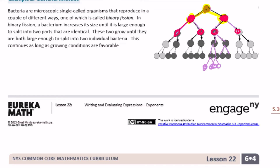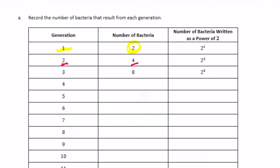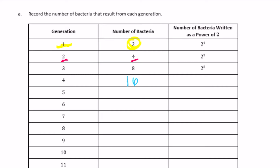The third generation turns into 8 bacteria, and the next generation is 16 — that's 2 to the fourth power. You can see the pattern: it's doubling every time, just like with the paper folds. Doubling again gives 32, which is 2 to the fifth power. Then 64 is 2 to the sixth power.